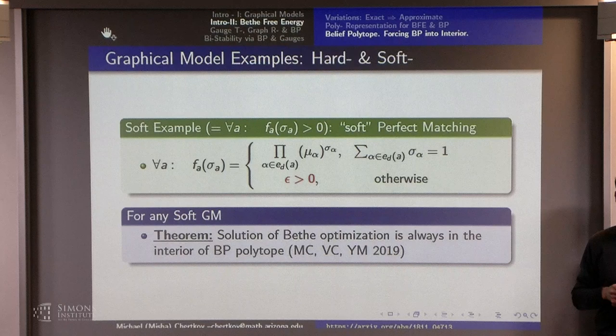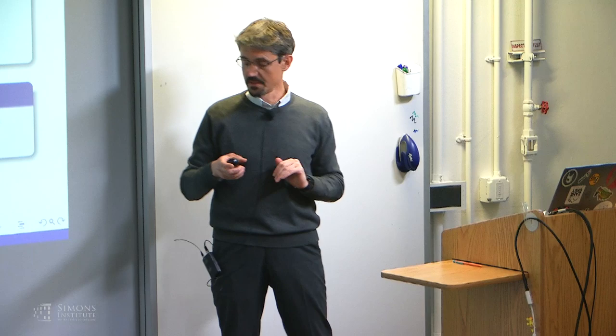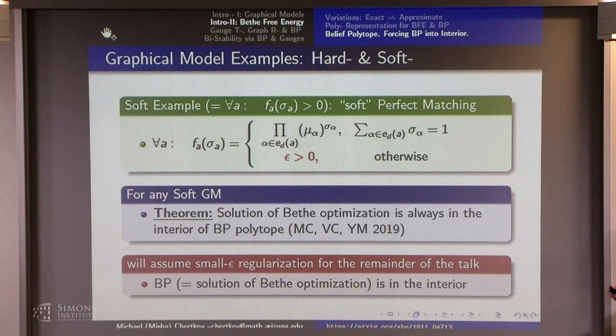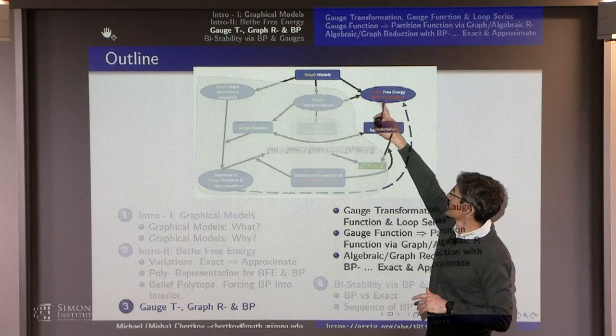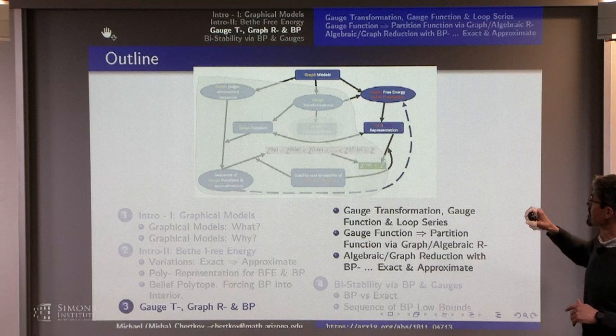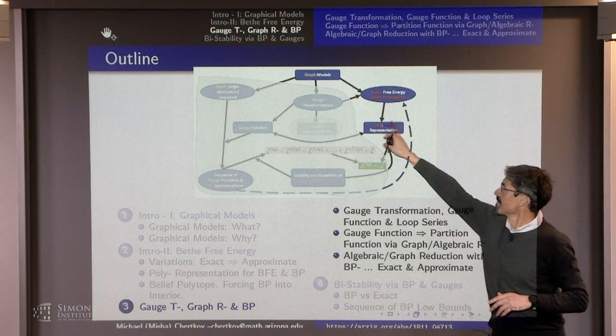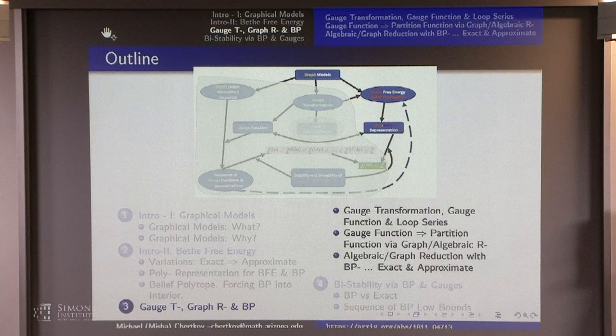I'll always assume I'm in the interior, so the minimization of Bethe free energy gives me a solution in the interior of the polytope. I went from graphical model to Bethe free energy, and mentioned it's a polynomial representation of Bethe free energy. Now let me take a completely different approach and go to gauge transformations — explain what they are, then there will be some graphical transformations, and I'll connect back to belief propagation through another path.